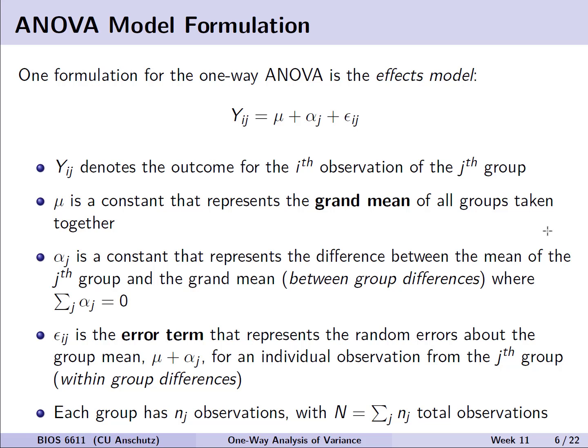So how can we formally evaluate if these four groups have a different mean birth weight? There are multiple ways of specifying a one-way ANOVA model, but one common way is what's known as an effects model. In this case, we have our outcome y_ij, the i-th observation of the j-th group. We define y_ij as equal to mu, the grand mean — a constant representing the overall mean of our entire dataset — plus alpha_j, another constant representing the difference between the mean of the j-th group and the grand mean, which represents between-group differences.